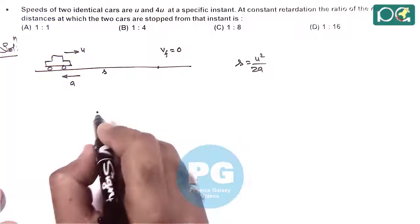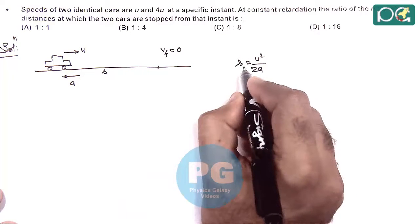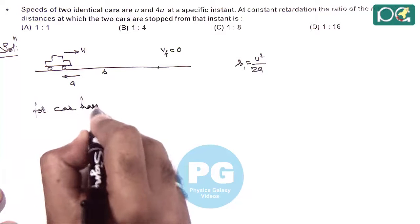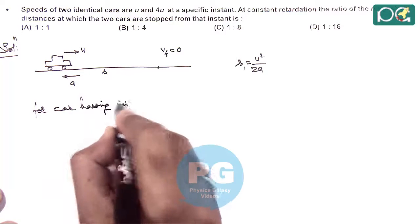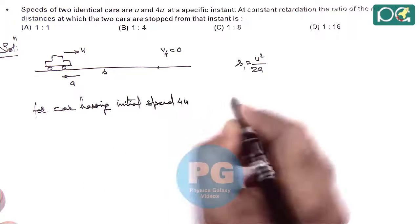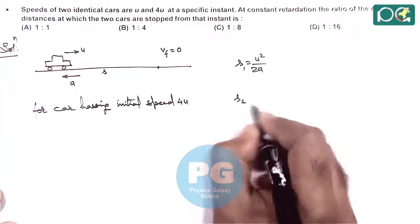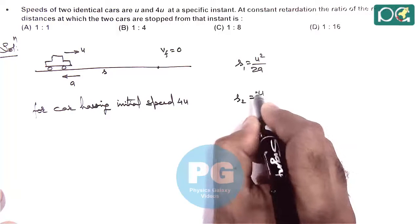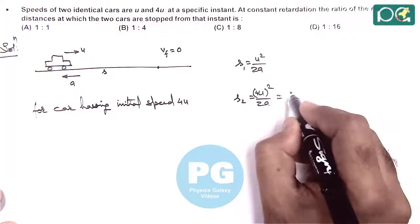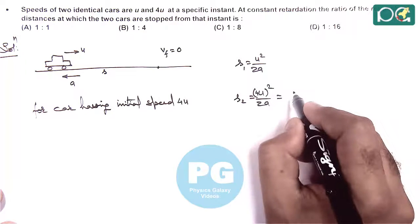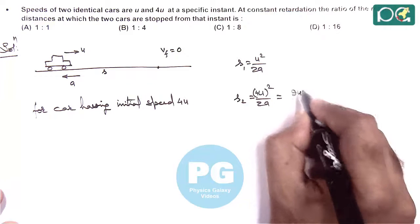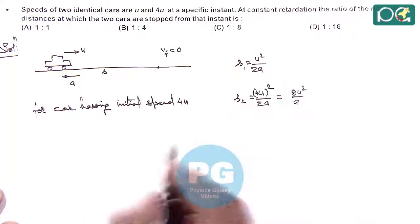We can directly write the distances. If this is s1 for car having initial speed u, distance s2 can be given as 4u whole square by 2a, that is 16u square by 2a, or we can write it 8u square by a. And from these relations we can write s1 by s2 is equal to...